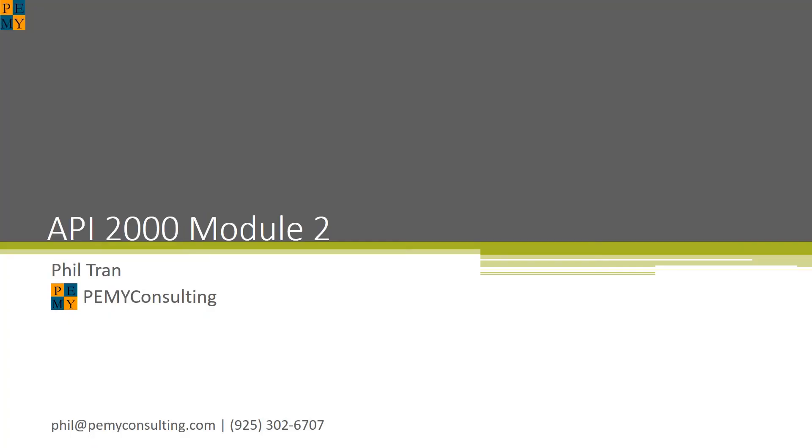Hi everyone, my name is Phil and this is our second module out of three for our API 2000 webinar. Today I will be covering the specific provisions that are used to determine the venting requirements and vacuum requirements for API 2000 and the calculations that are required for that.